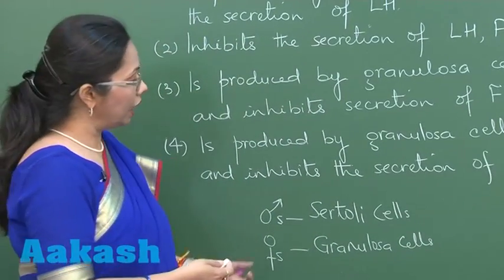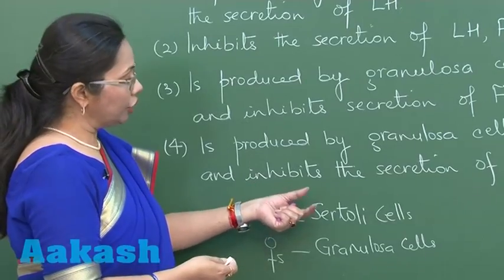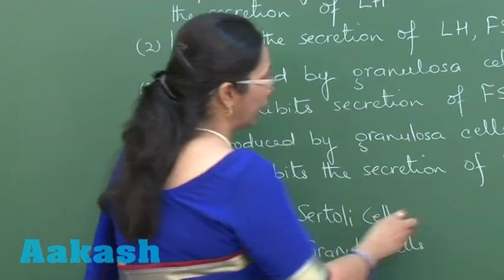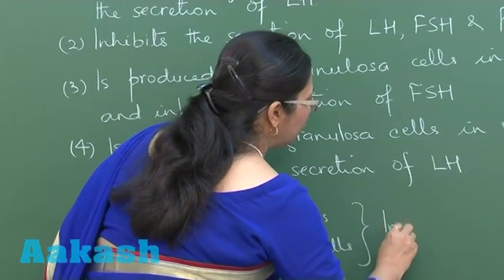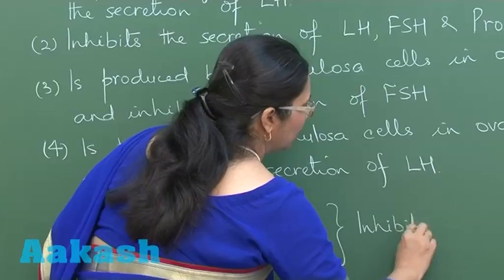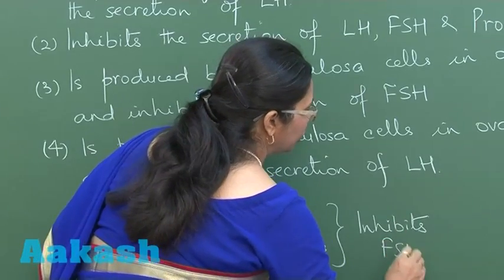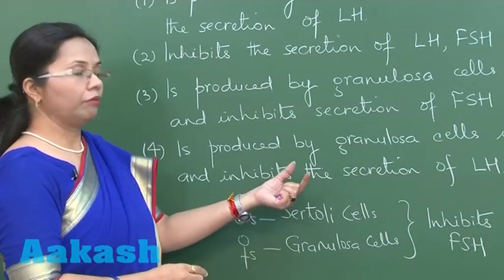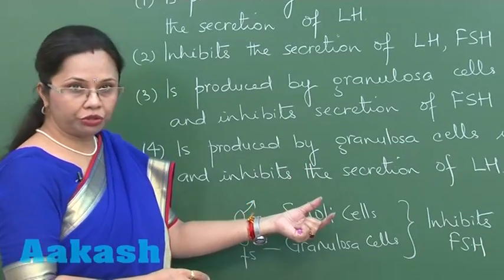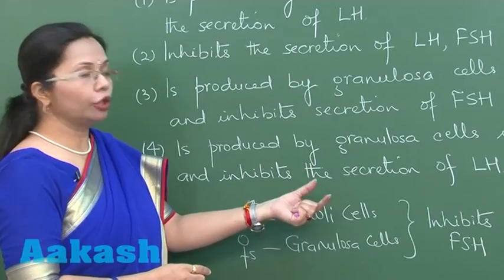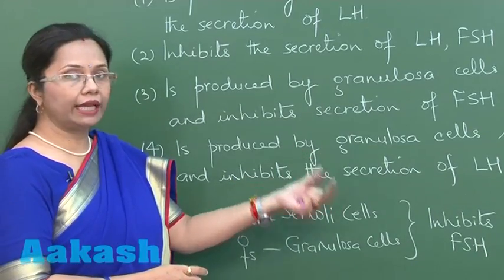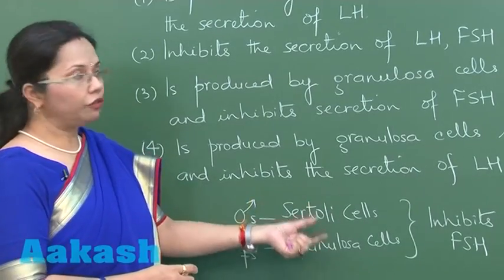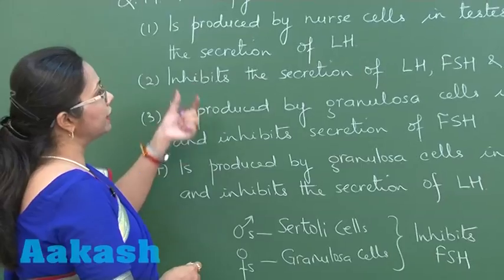In both males and females, inhibin inhibits FSH secretion. The target of inhibin is the pituitary gland, and specifically it inhibits the cells in the pituitary that release FSH. Now let's look at the answer options.